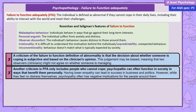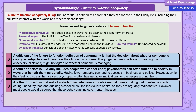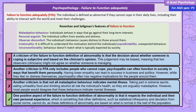However, while they feel no distress themselves, psychopathy often has negative implications for the people around them. Another criticism is that not all maladaptive behaviour is an indication of mental illness. Taking part in extreme sports or smoking and drinking alcohol all risks the individual's health, so arguably maladaptive, but we wouldn't want to diagnose these people with a mental illness. One positive aspect of the failure to function definition is that it respects the individual and their own experience, which is something that other definitions such as statistical infrequency and deviation from social norms cannot do.